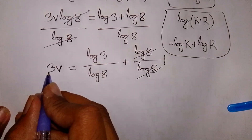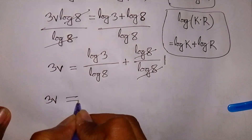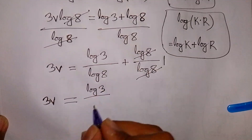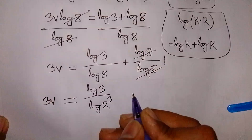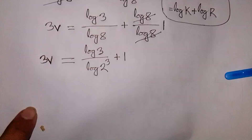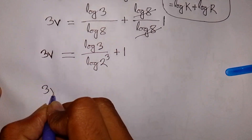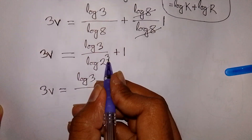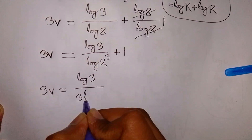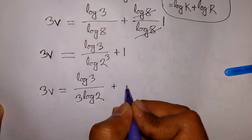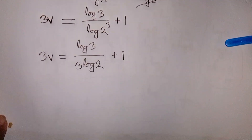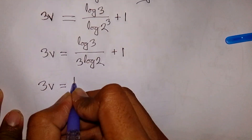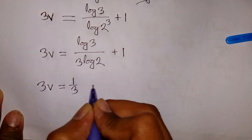In the next step, 3V is equal to log 3 over log 8 plus 1. Now, log 8 is the same as log 2 power 3, so this power 3 moves to the front giving 3·log 2. Therefore, log 3 over log 8 becomes log 3 over 3·log 2, which is 1 over 3 times log 3 over log 2, plus 1.